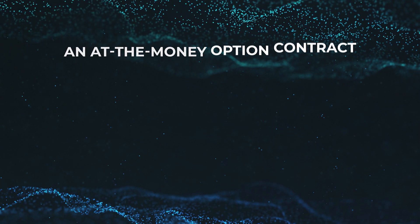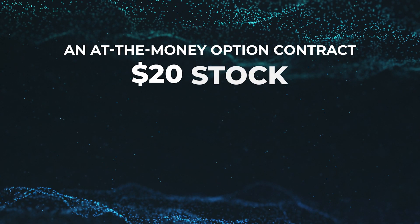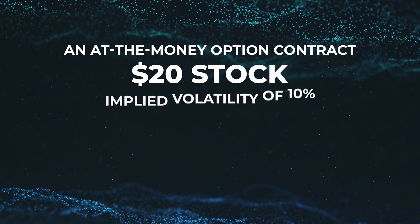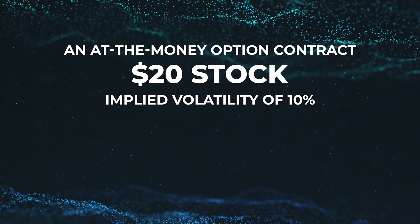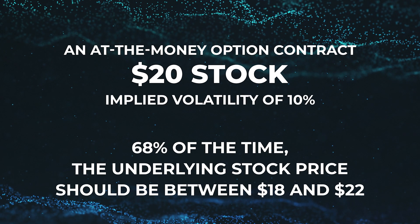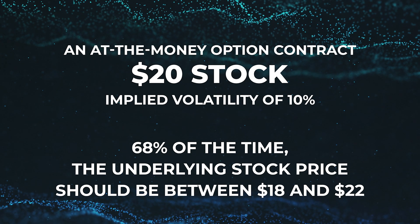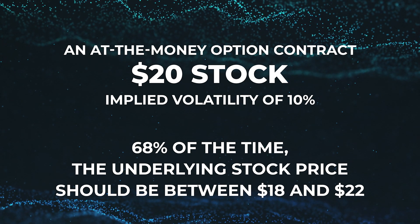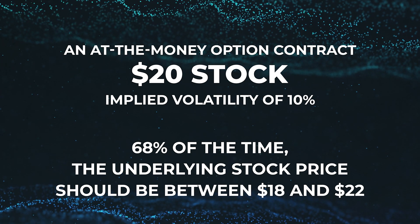For example, an at-the-money option contract for a $20 stock with an implied volatility of 10% indicates that 68% of the time, the underlying stock price should be between $18 and $22 by expiration.